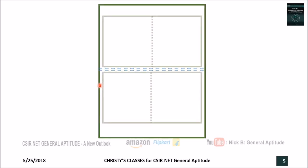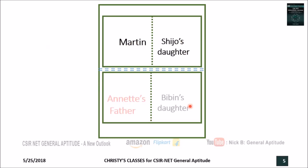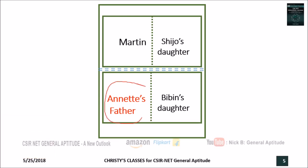I mentioned yesterday there are different methods, including the visual method using a table. But in this question, what we need is to picturize a real badminton court and place the players accordingly. Let this be the badminton court. Martin and Shijo's daughter are on the same side. On the opposite side: Annette's father and Bibin's daughter. The question asks us to find who is Annette's father — that marked position. This is what we want to find.